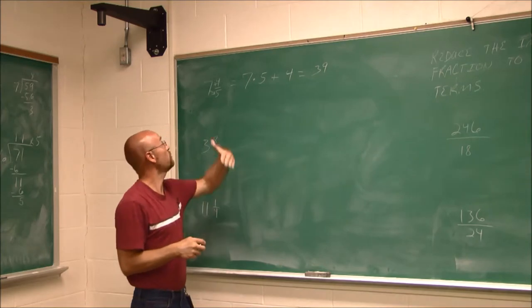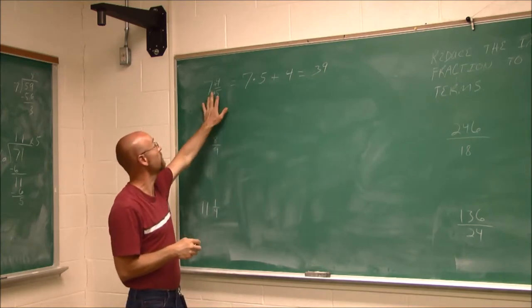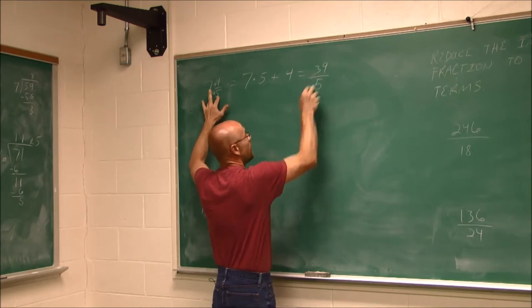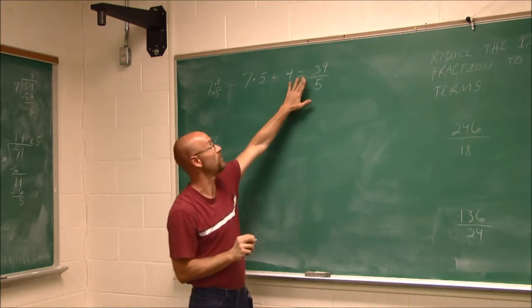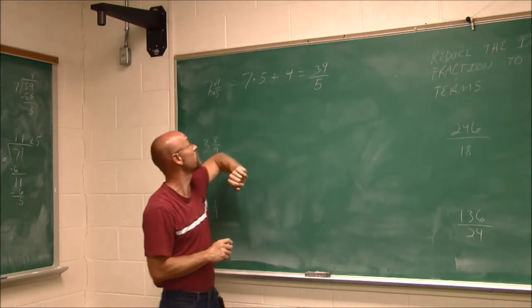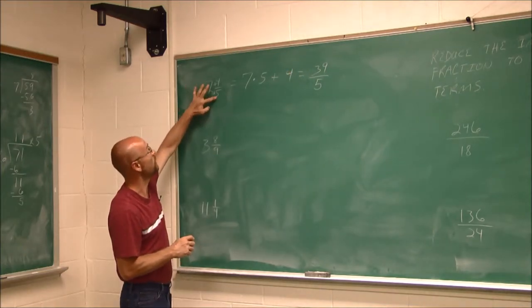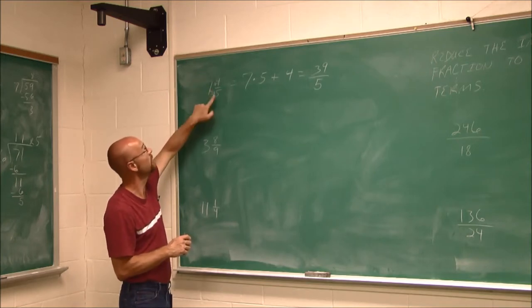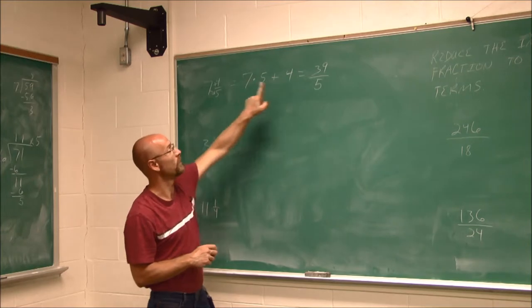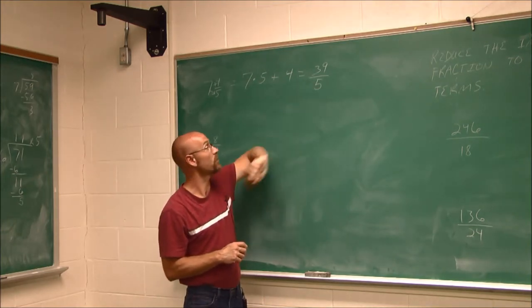And now we have to put it over the divisor. Because we haven't changed its value, there was still division here. And we didn't do any division, so we have to have division here. 39 over a divisor of 5, 39 fifths. So 7 times 5 plus 4 is 39 over that 5. So this 7 and 4 fifths is equivalent to 39 fifths.